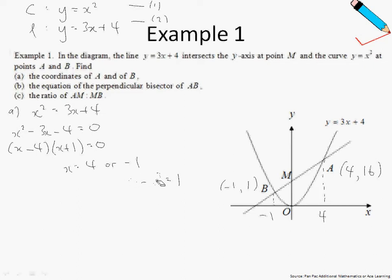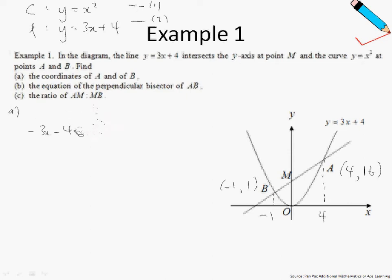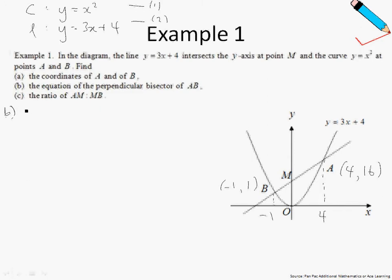Moving on to part B, we find the equation of the perpendicular bisector of AB. To find the equation of any line, you basically need the gradient M, as well as a point on the line. Let us first find the gradient of line AB. By reading off equation number two, you can see that the gradient of line AB is 3.